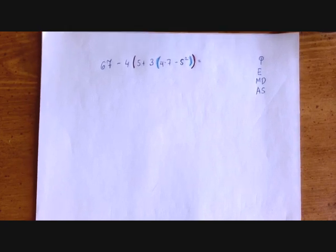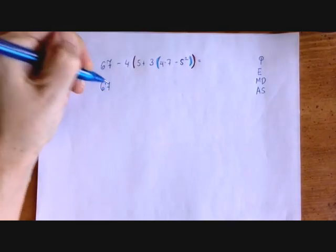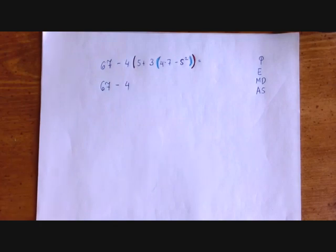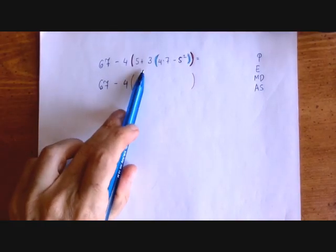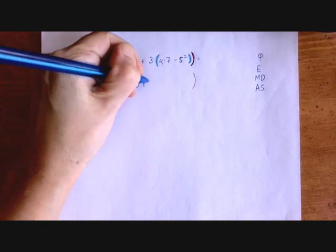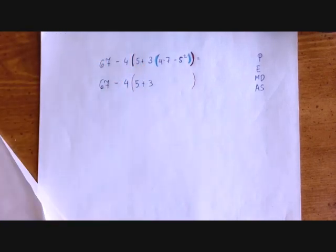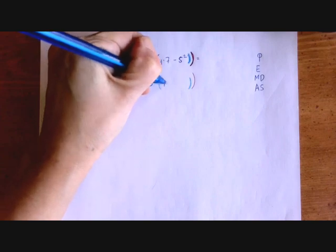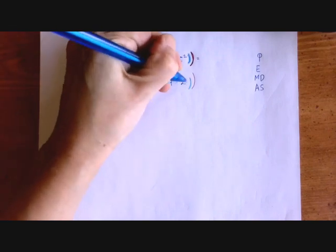So we have 67 minus 4 times. Now we might be tempted to say 8 here, but it's 5 plus 3 times something. 5 plus 3 times. And in the parenthesis, we'll have 4 times 7 minus 25.